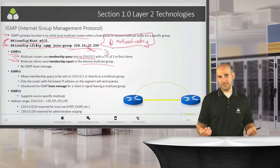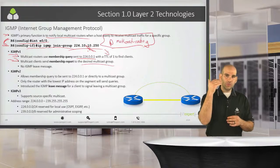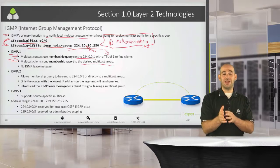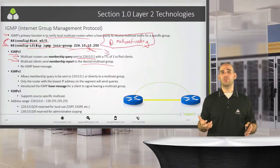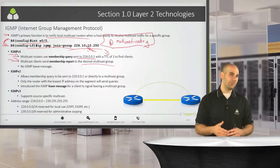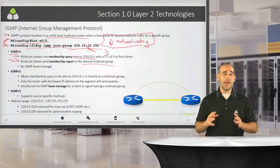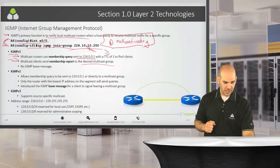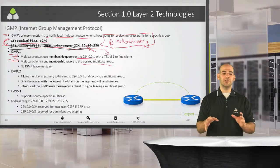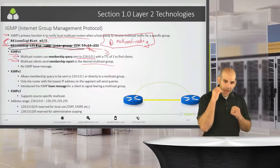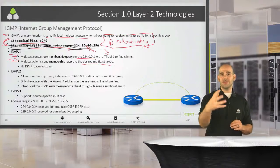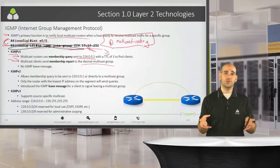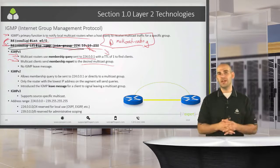In IGMP version 1, there was no leave message. So when we wanted to stop receiving multicast traffic, we couldn't send a leave. We would continue receiving traffic until that membership report timed out and the query came back — and only if we didn't respond would the router stop sending us that traffic. So there were some significant issues with version 1.